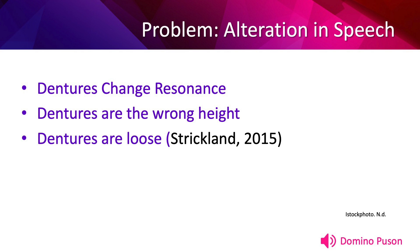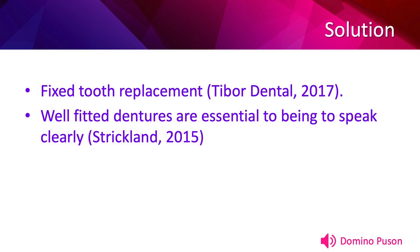The three reasons why dentures can interfere with speech, as quoted from Strickland 2015, are: first, dentures change resonance — the mouth has a particular resonance chamber before dentures, and dentures take up more space leading to a change in how resonance works in the mouth; improperly fit dentures fill the mouth making it hard to speak. Second, dentures with wrong height — dentures can be too short or too long, causing soreness in the jaw after eating. Third, dentures are loose — the tongue spends so much time trying to control the dentures that it loses focus on speech. The two solutions identified are fixed tooth replacement, a permanent solution that resembles natural teeth, and well-fitted dentures, which are essential to being able to speak clearly.